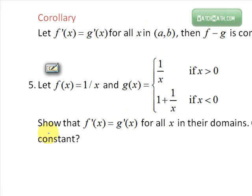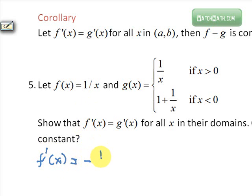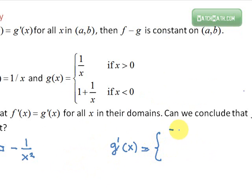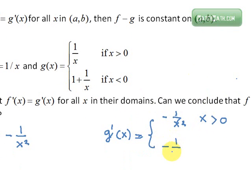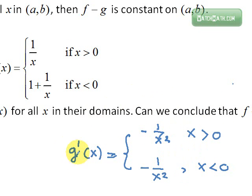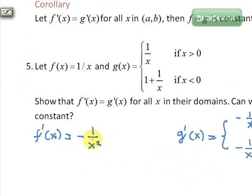First, show that f prime of x equals g prime of x for all x in their domains. So f prime of x is clearly minus one over x squared, and g prime of x is also equal to minus one over x squared if x is greater than zero, and the derivative is also negative one over x squared if x is less than zero. So in the domain of both, f prime of x is equal to g prime of x.